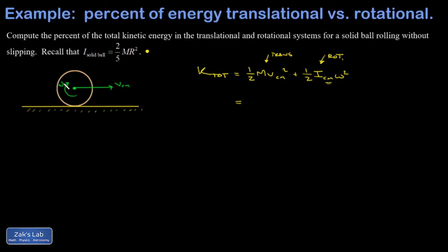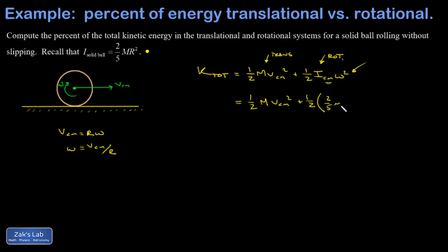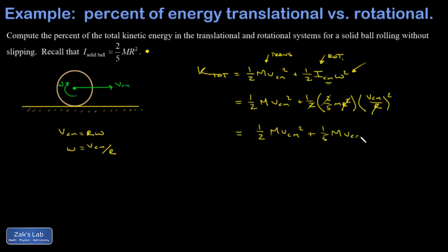For rolling without slipping, v_cm equals r times omega, so omega equals v_cm divided by r. Substituting that in, I get one-half m v_cm squared plus one-half times two-fifths mr² times (v_cm over r) squared. When I square that, the radius cancels — meaning r is not relevant to the question of what percentage of kinetic energy is in each term. Cleaning up, I have one-half m v_cm squared plus one-fifth m v_cm squared.